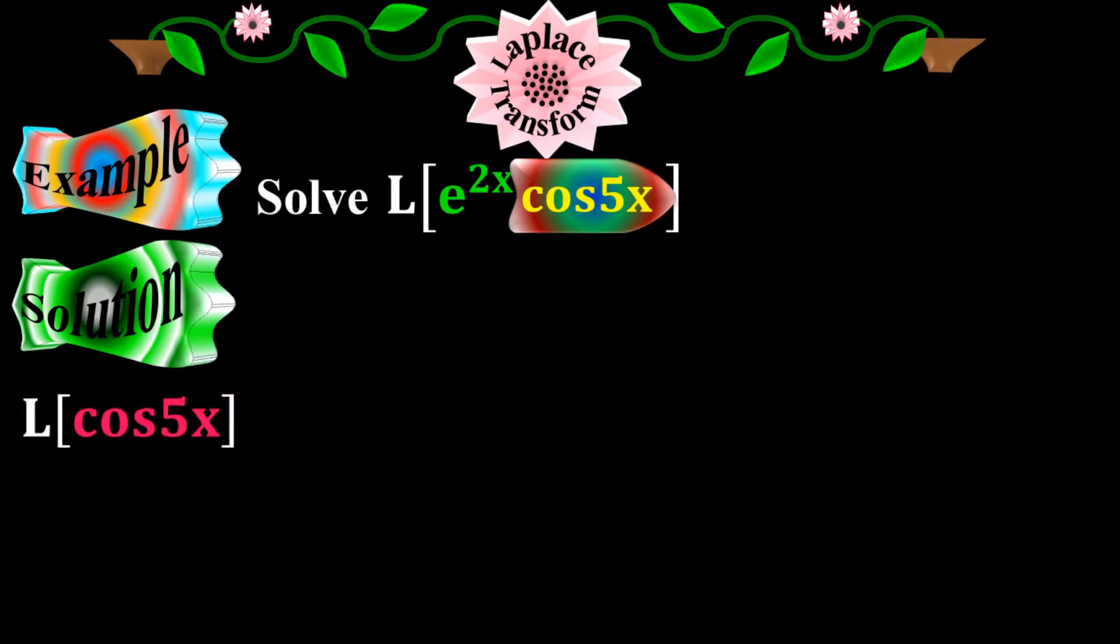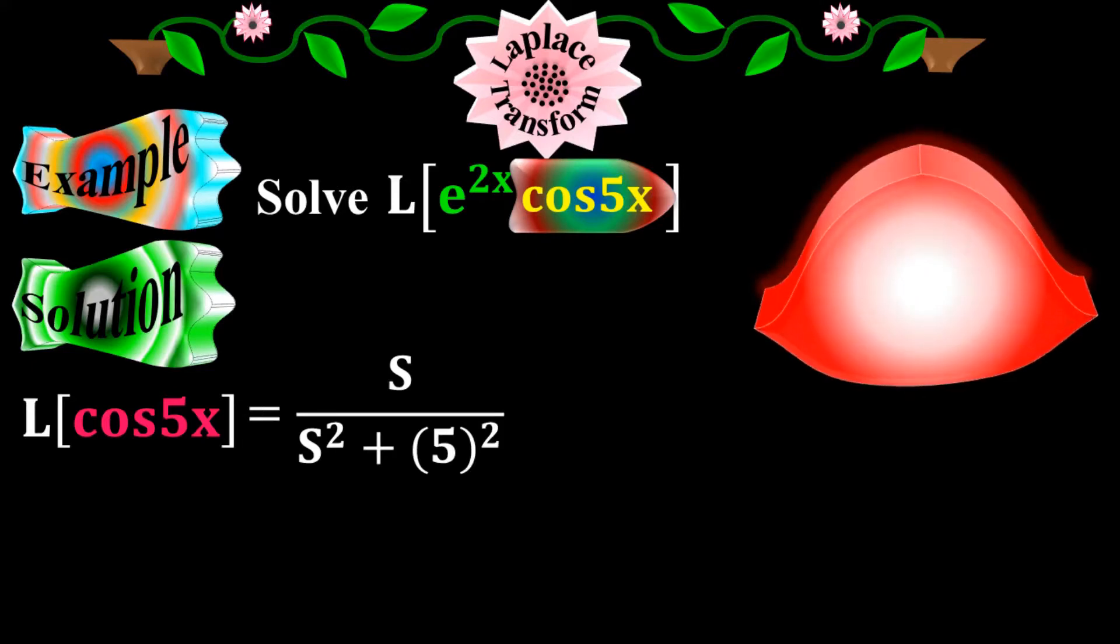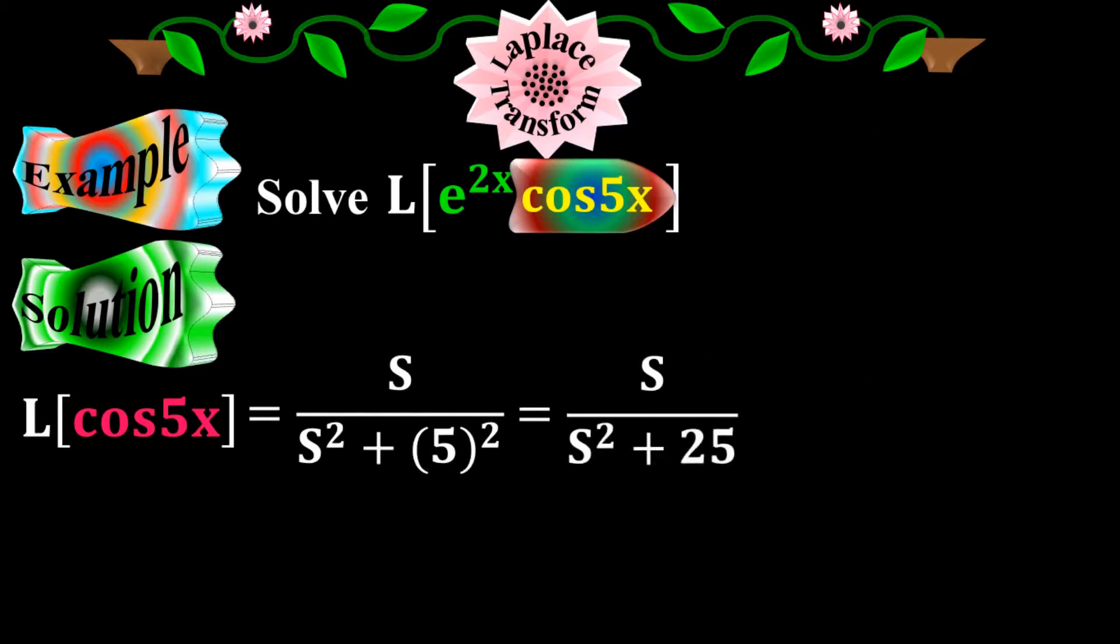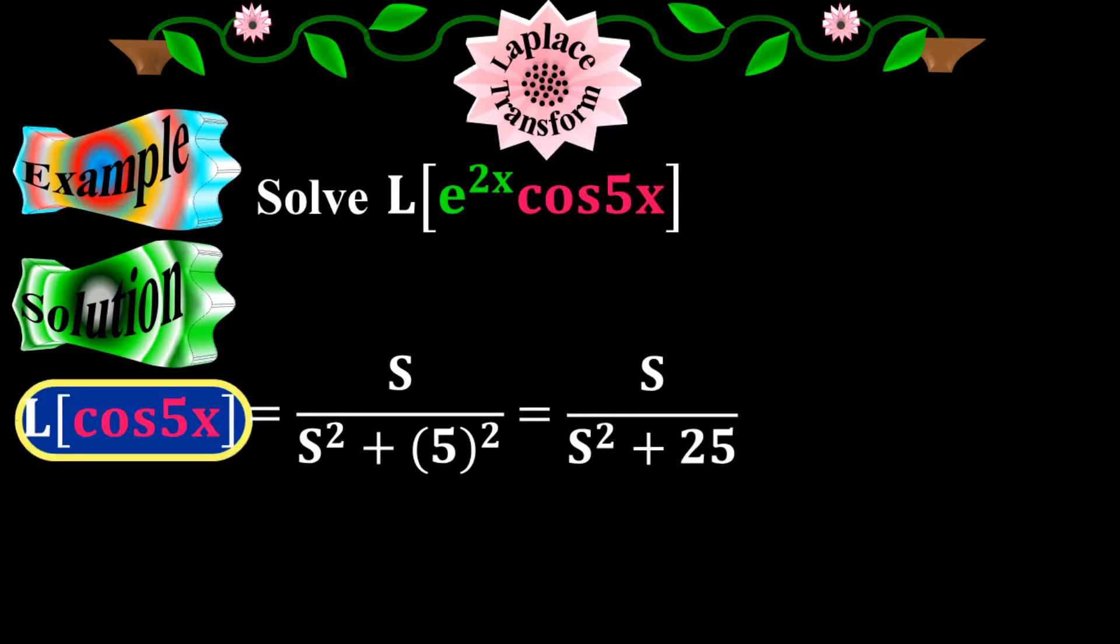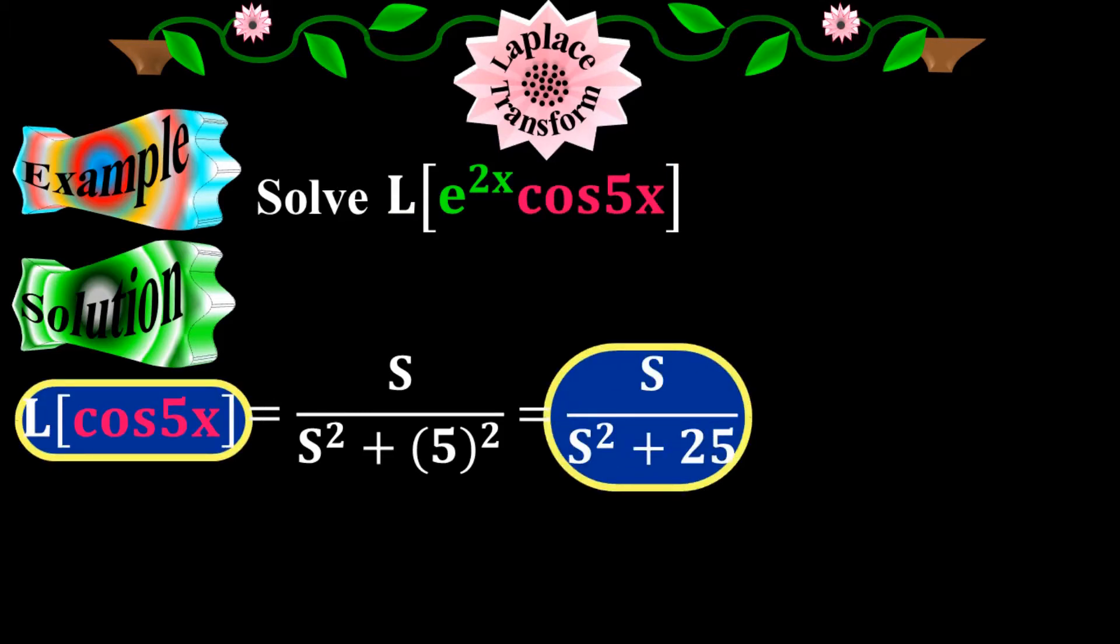Laplace of cos 5x equals to s over s squared plus 5 to the 2. I apply the fourth elementary condition here, which is cos ax equals to s over s squared plus a squared, where my constant a is 5 here. It equals to s over s squared plus 25. So Laplace of cos 5x equals to s over s squared plus 25.